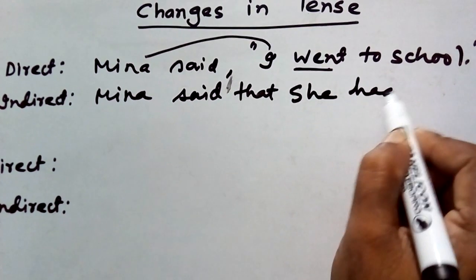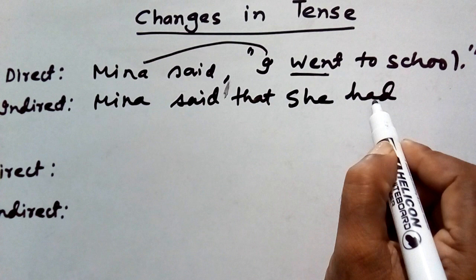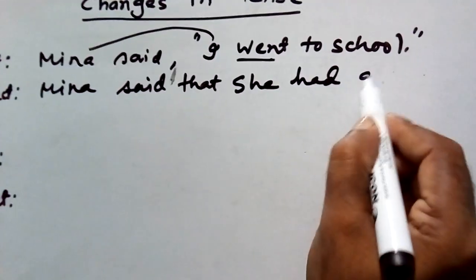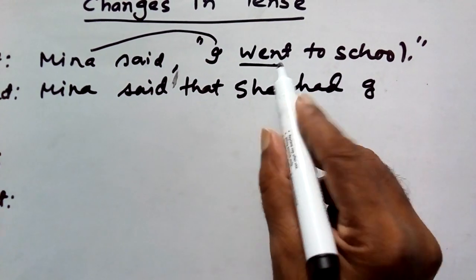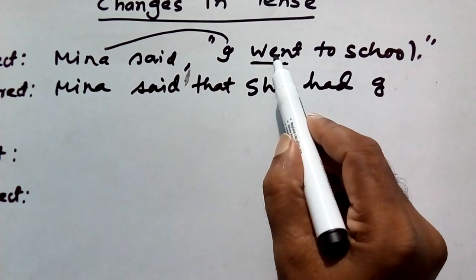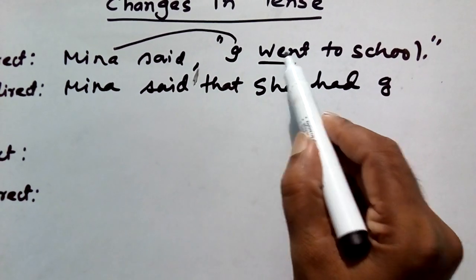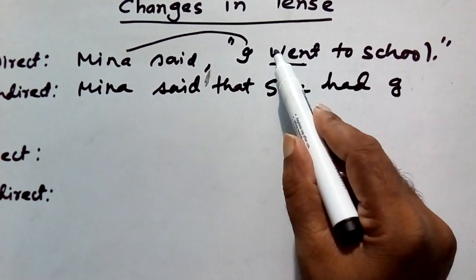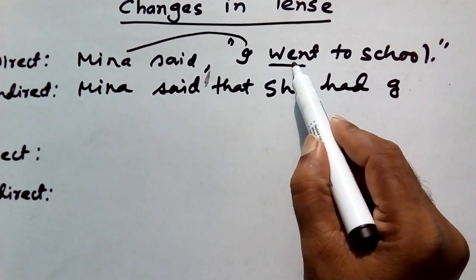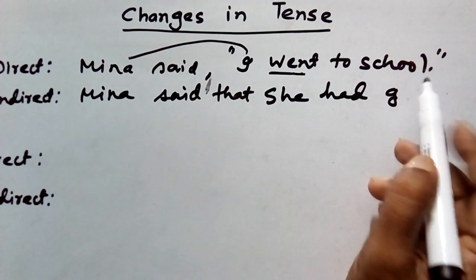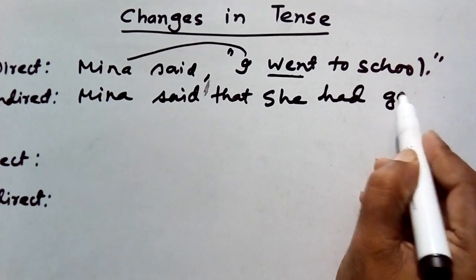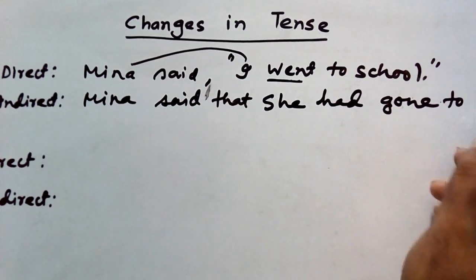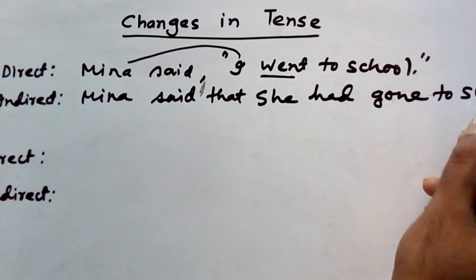In past perfect tense, we have the auxiliary 'had.' We have 'go,' and 'gone' — G, O, N, E — as it is past simple, it will turn into past perfect. 'Go' is the present form, 'went' is the past form, so 'gone' is the past participle. Therefore: 'She had gone to school.' That is how we change this sentence.